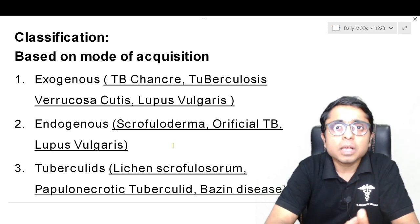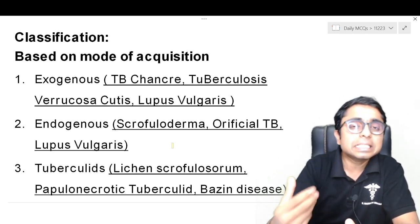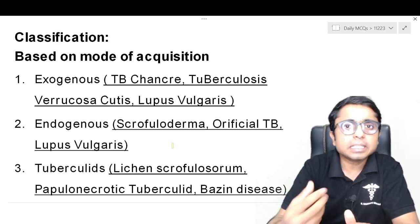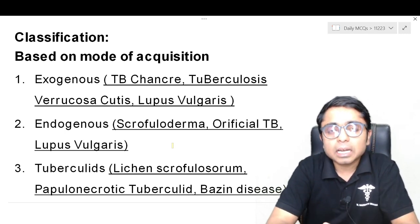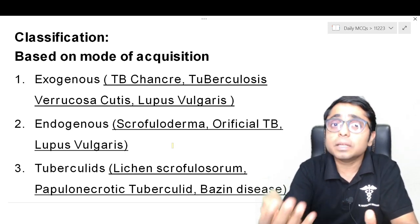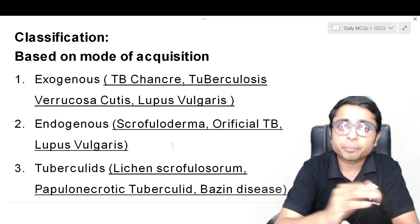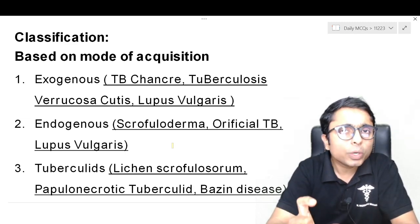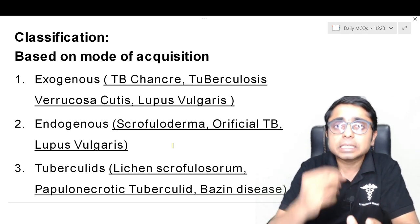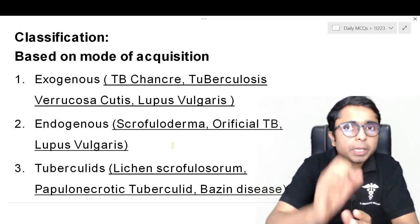In the endogenous form, there are three possibilities. First is scrofuloderma, in which the contiguous surrounding areas harbor MTB bacillus, which proliferates and manifests onto the skin surface. The underlying structures can be lymph nodes as in this MCQ, or joints, or even bones. The next possibility is orificial tuberculosis, in which through saliva or fecal matter, the perioral and perianal skin becomes infected with MTB bacillus.